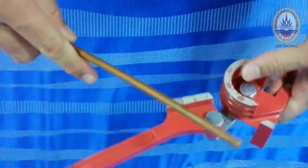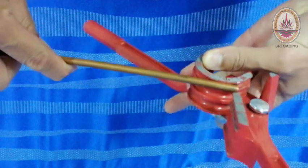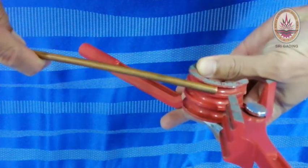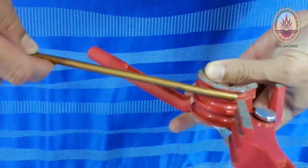First thing, you need to slot in the copper pipe into the correct size. So this one is fit with this quarter inch, not this one.